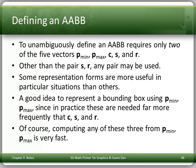To unambiguously define an AABB you need only two of the five vectors described — Pmin, Pmax, C, S, and R — other than the pair S and R, any pair can be used. It's generally a good idea to represent a bounding box using Pmin and Pmax, since in practice these are needed far more frequently. Computing any of C, S, or R from Pmin and Pmax is very fast.